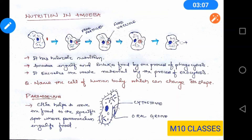Now let us come to paramecium. Paramecium is also a unicellular organism and it also has a holozoic mode of nutrition. But unlike amoeba, it cannot change its shape. So how does it collect and engulf food? Paramecium has tiny hair-like structures all over its body called cilia. With the help of cilia, paramecium moves the food particle to a particular spot on its body called the cytostome, where it engulfs the food, as you can see in the figure.